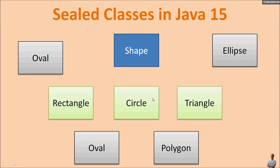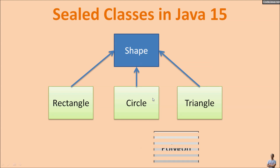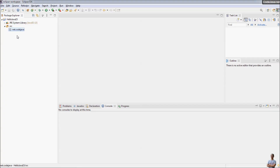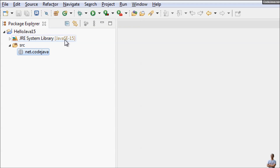Suppose that we have the Shape class and we want to restrict only three classes that are subclasses of the Shape class: Triangle, Circle, and Rectangle. No other class can extend the Shape class, and hence the Shape class is sealed. There are only three known subclasses of Shape, and no other unknown classes can extend it. I will show you some code examples in Eclipse IDE, where I have a project configured with Java 15.